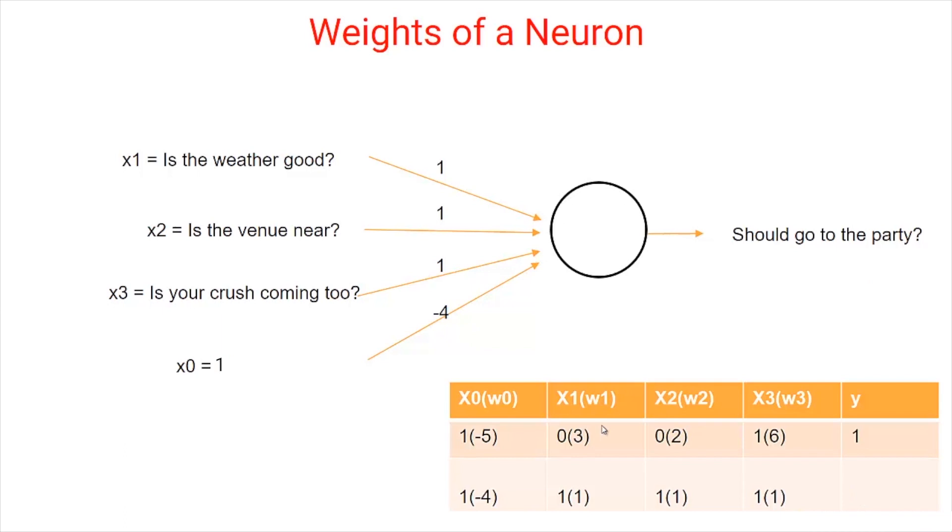Similarly, imagine you are sick today and no matter what, you will not attend the party. Then this situation can be represented by assigning equal weight to weather, venue and crush with a threshold of 4. Now, even if the weather is good, the venue is near and your crush is coming, you won't be going to the party since the sum 1 plus 1 plus 1 equal to 3 is less than the threshold value of 4.